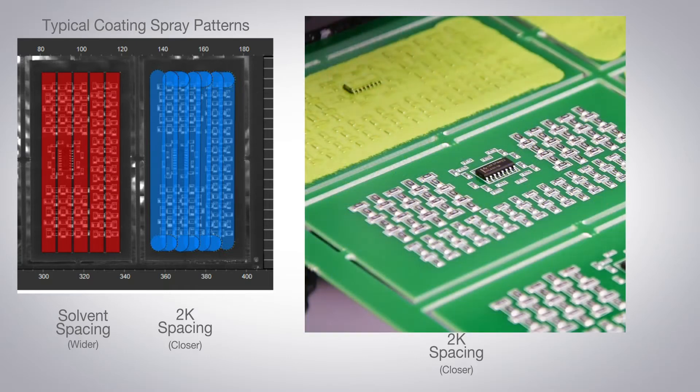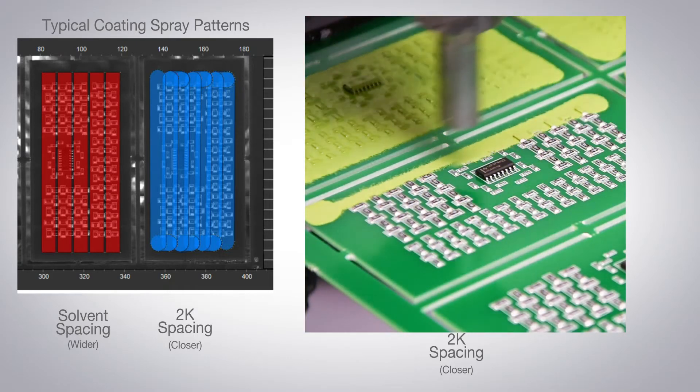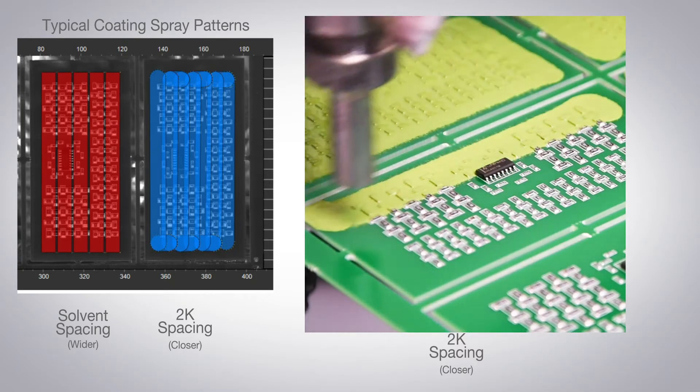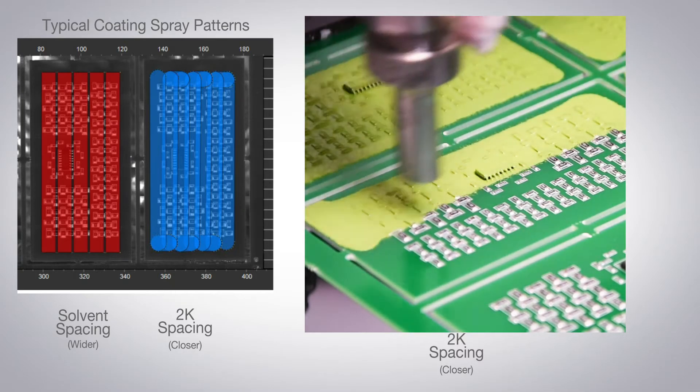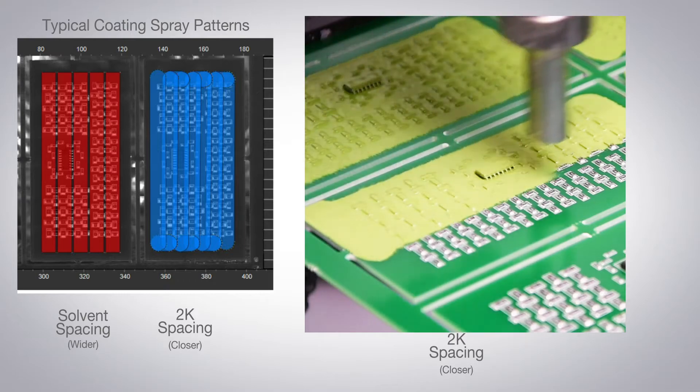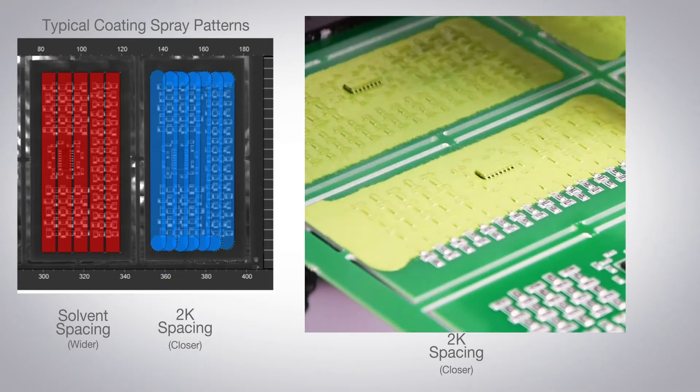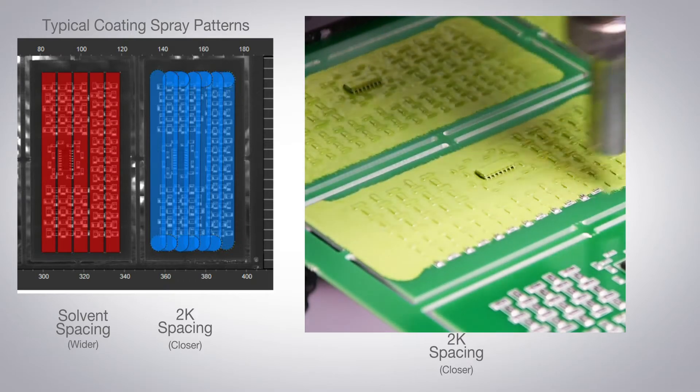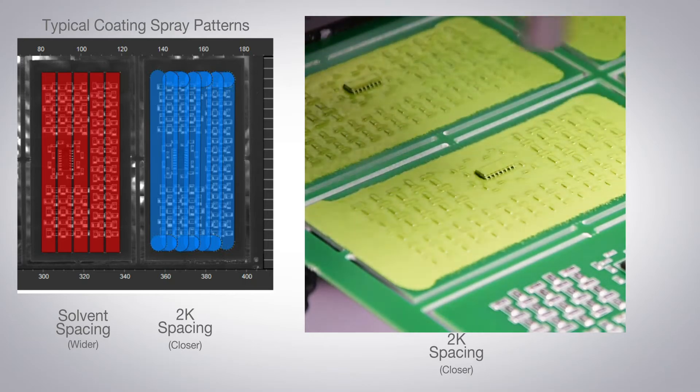With spray materials in general, and 2K materials in particular, the materials are less likely to flow. It is therefore important that there is an overlap between sprayed lines, usually 40-60% dependent on height of components being sprayed.